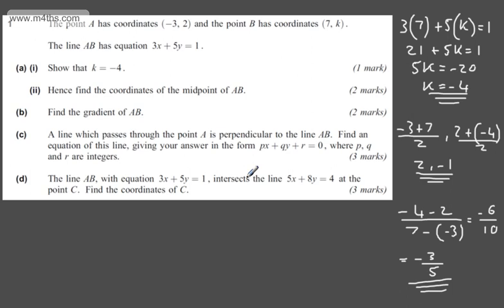In part C for three marks, we're told a line which passes through the point A is perpendicular to the line AB. We're asked to find an equation of this line, given our answer in the form Px + Qy + R = 0, where P, Q, and R are integers. So three marks for this part of the question.